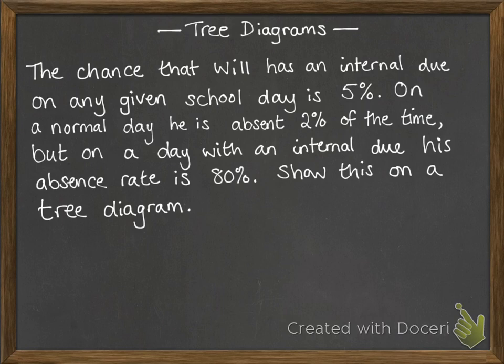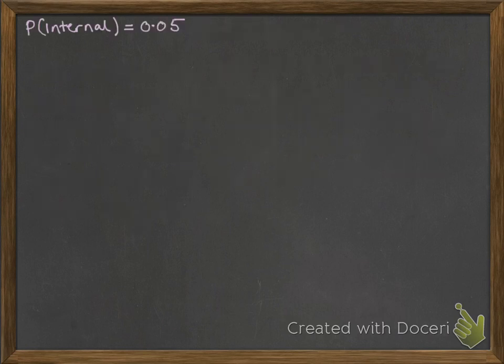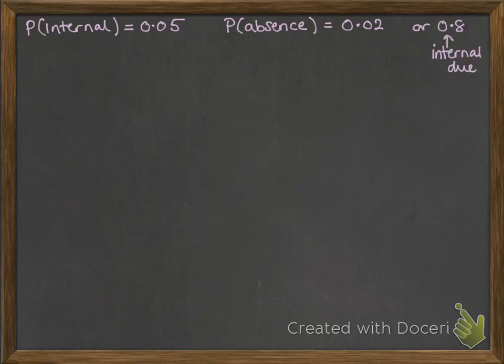Show this on a tree diagram. First we're going to summarize that data at the top of the next slide so we can have space to do the tree diagram. We've got P(internal) = 0.05, P(absence) = 0.02, but if an internal is due it's 0.8.